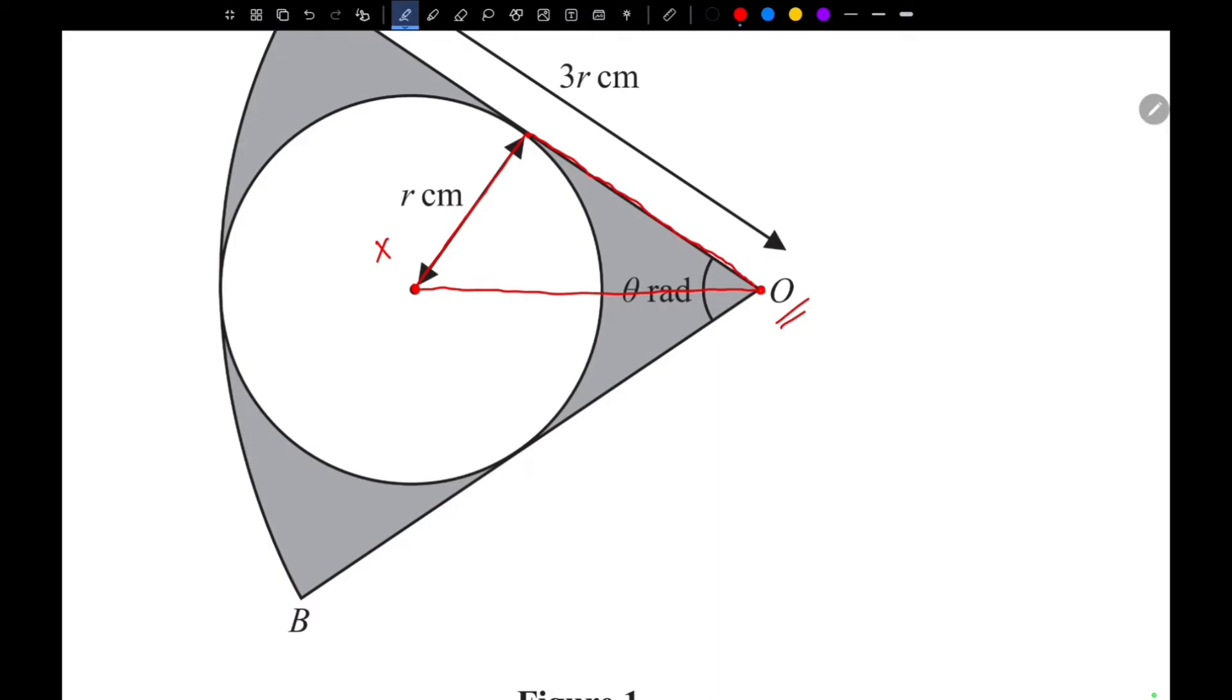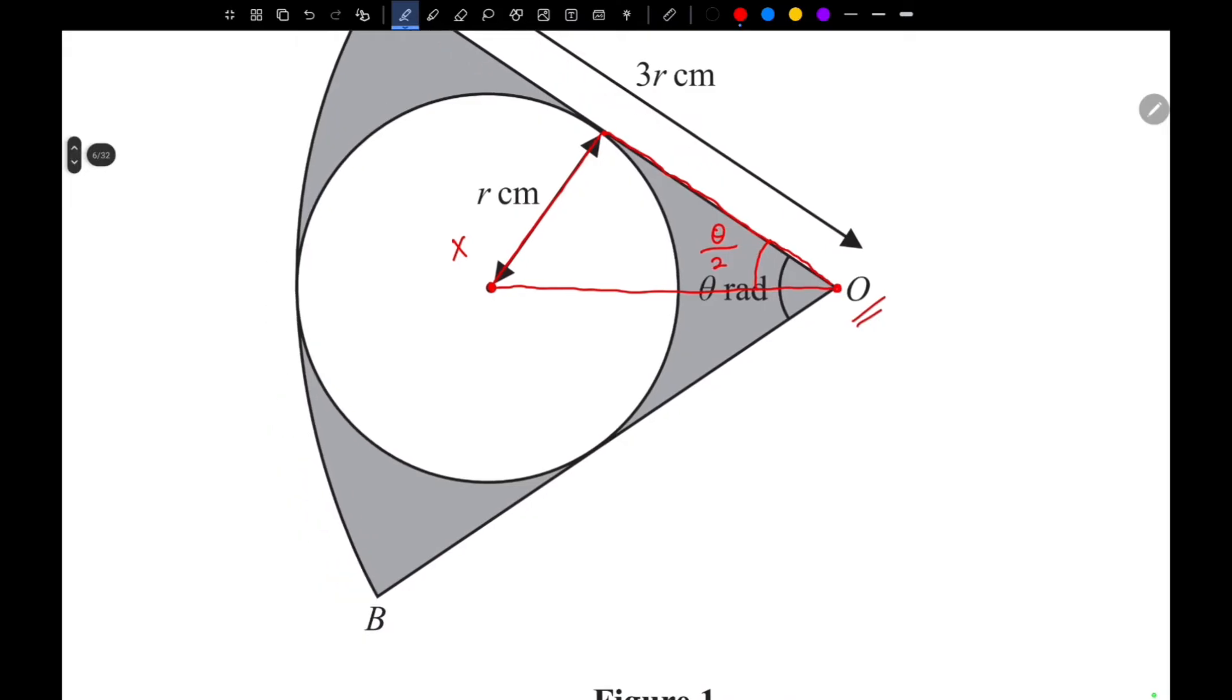And draw a triangle from this point, and this angle will be theta over 2. So this is theta over 2.